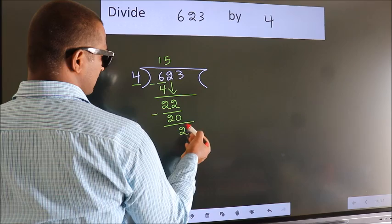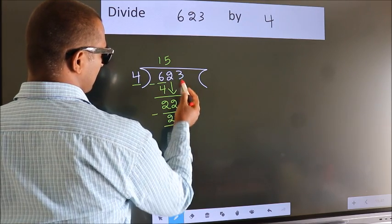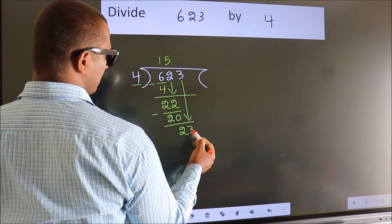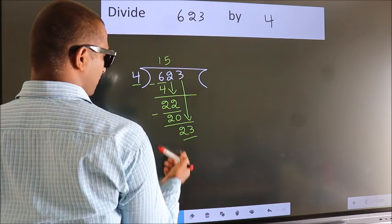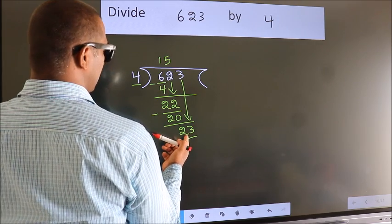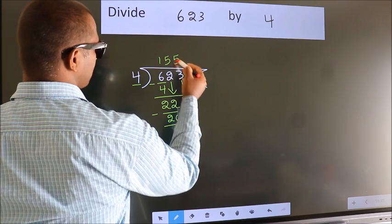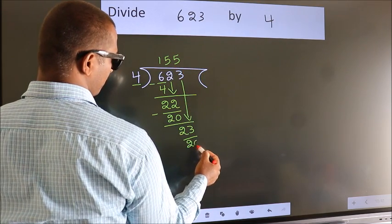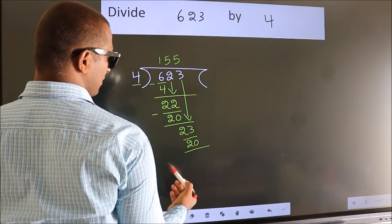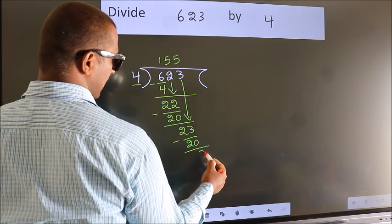After this, bring down the beside number. So, 3 down. So, 23. A number close to 23 in the 4 table is 4 5s 20. Now, we subtract. We get 3.